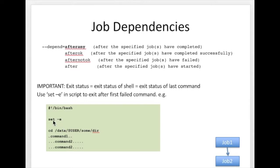You can use the set -e command in your batch script. set -e causes the batch script to exit after the first failed command. So if command 2 failed, the batch script would exit immediately and the job would be marked as failing.